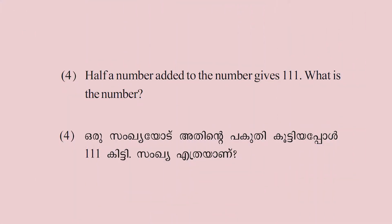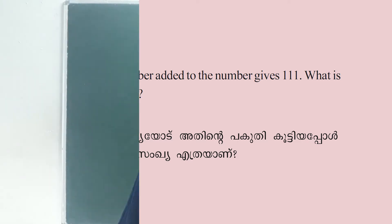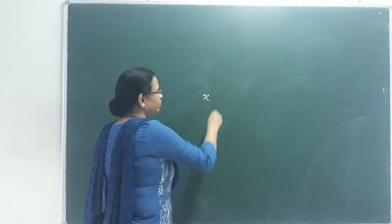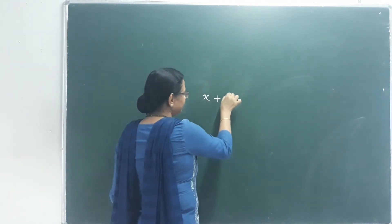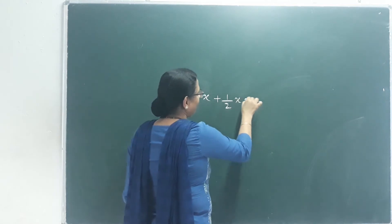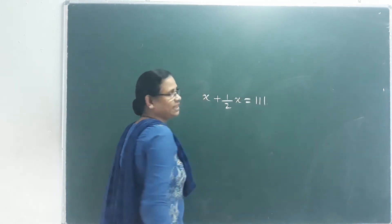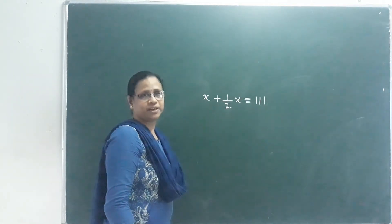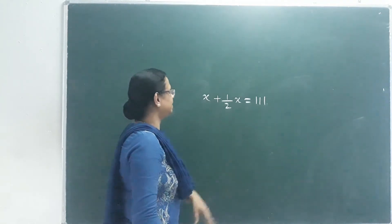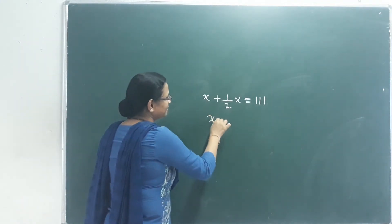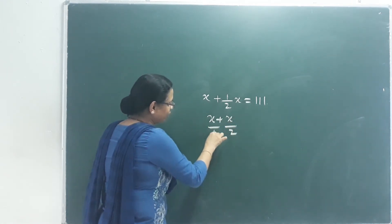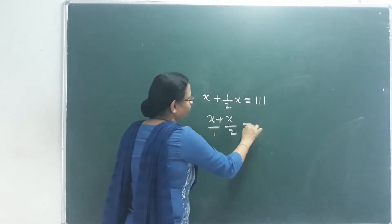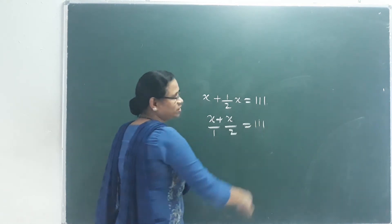Half a number added to the number gives 111. What is the number? That means x plus x by 2 equals 111. The denominator is 2, so we multiply through.